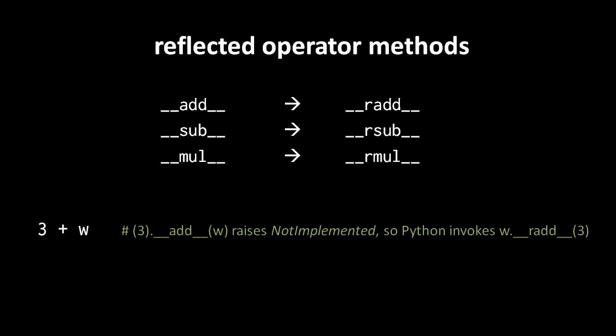Now assuming you want there to be a defined behavior with the plus operator and instances of this type, then you would give that type both an add method and an r add method, a reflected add method. And generally, in most cases, you will want them to basically do exactly the same thing. The only difference is that the r add method is invoked when the instance of the class is only the right operand.